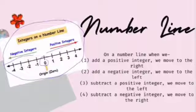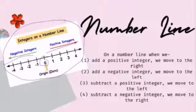There are some points to remember. Add a positive integer to move to the right. Add a negative integer to move to the left. To subtract a positive integer, we move to the left. To subtract a negative integer, we move to the right.